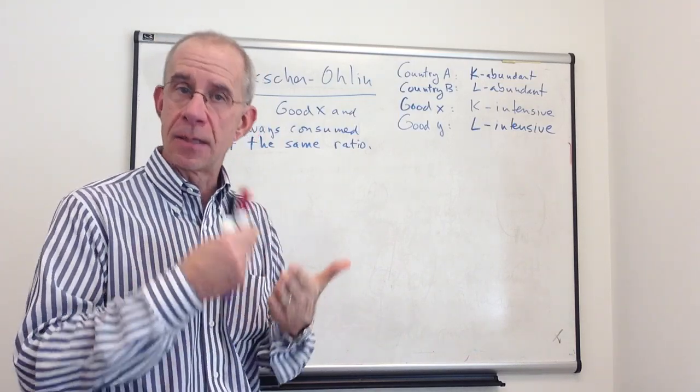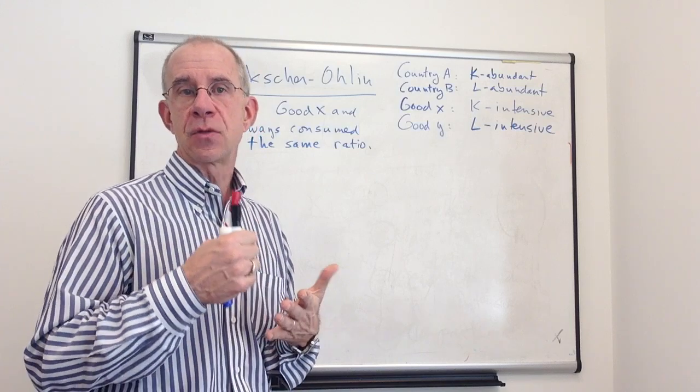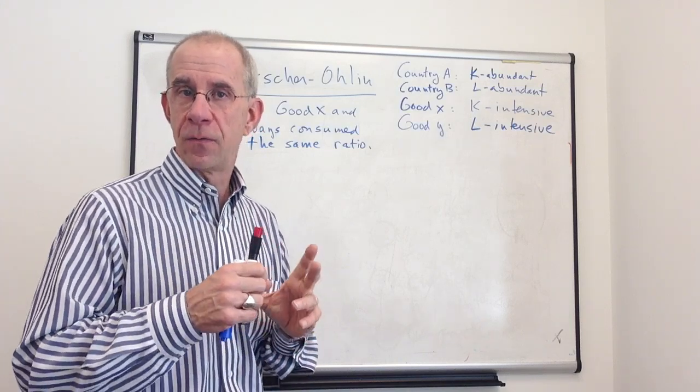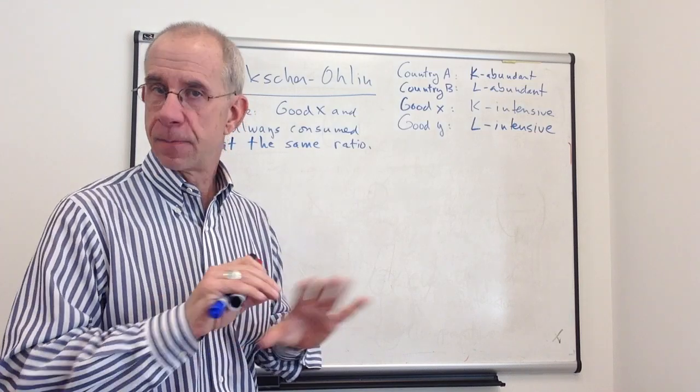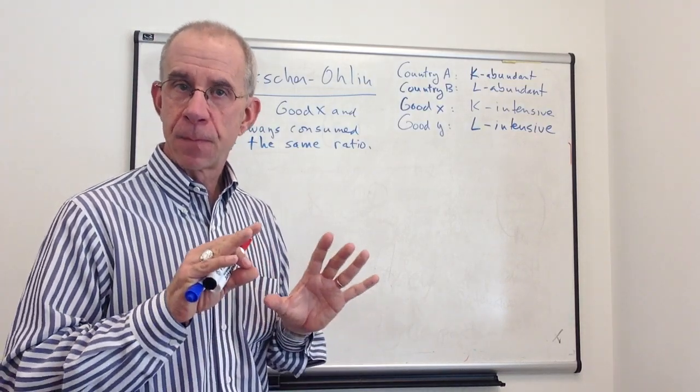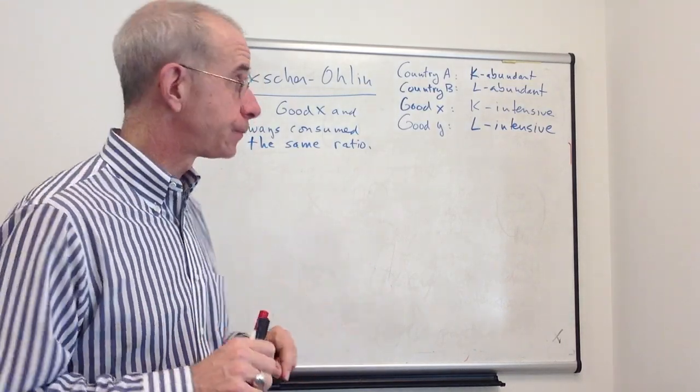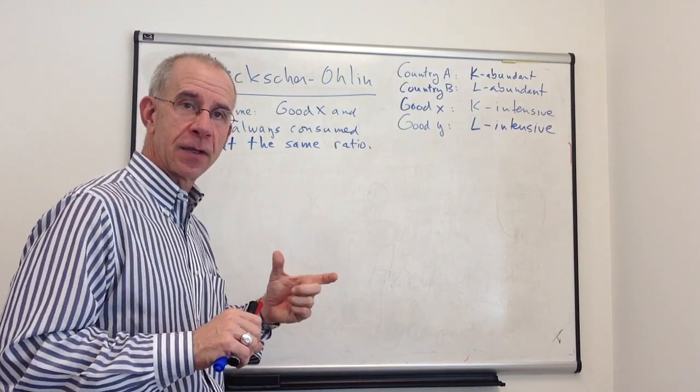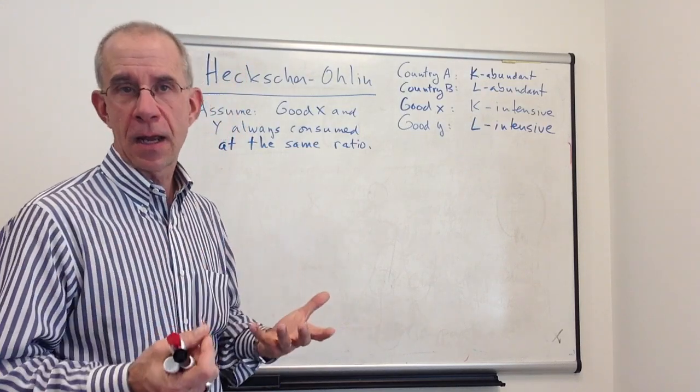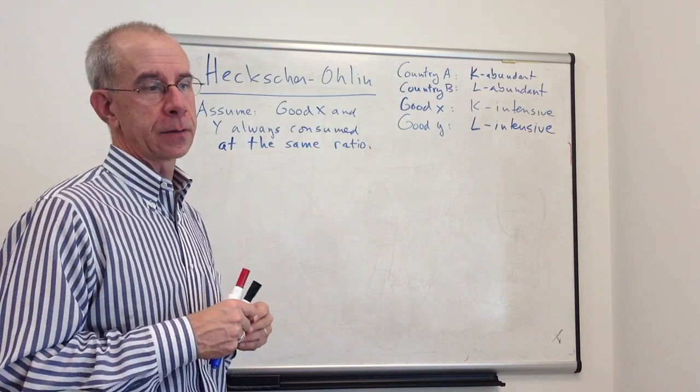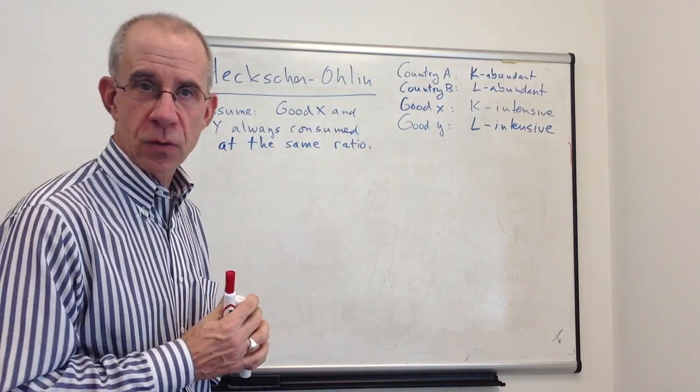So Heckscher-Ohlin is a neoclassical model that is trying to explain the patterns of trade. Bottom line, it's about predicting the patterns of trade. And the differences in the factor endowments are going to drive relative prices and drive countries to have an incentive to trade with each other.